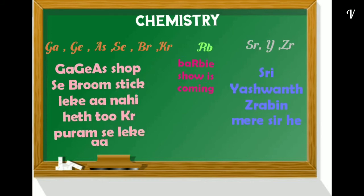Gallium, Germanium, Arsenic, Selenium, Bromine, Krypton, Rubidium, Strontium, Yttrium, Zirconium. Gagya's shop se Broom stick le, khe ya nahi hai toh kyaar puram se le khe ya. Barbie show is coming. Sri Yashman's Rabeen mere sir hai. Gagya's means Gallium, Germanium, Arsenic are mixed. And Barbie, Rb is there in that so we took like that.